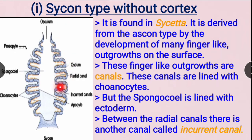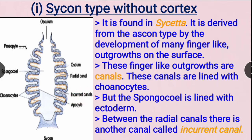These finger-like outgrowths are commonly called foldings. Within these foldings we see canals, all of which are lined with choanocytes. The spongocoel, however, is lined with ectoderm. Between the radial canals and the outer surface we see structures called incurrent canals.